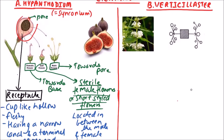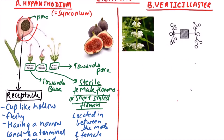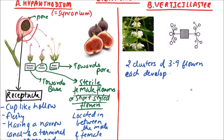Next is verticillaster. In the verticillaster type of inflorescence, two clusters of 3 to 9 flowers each develop on a node in the axil of opposite leaves.